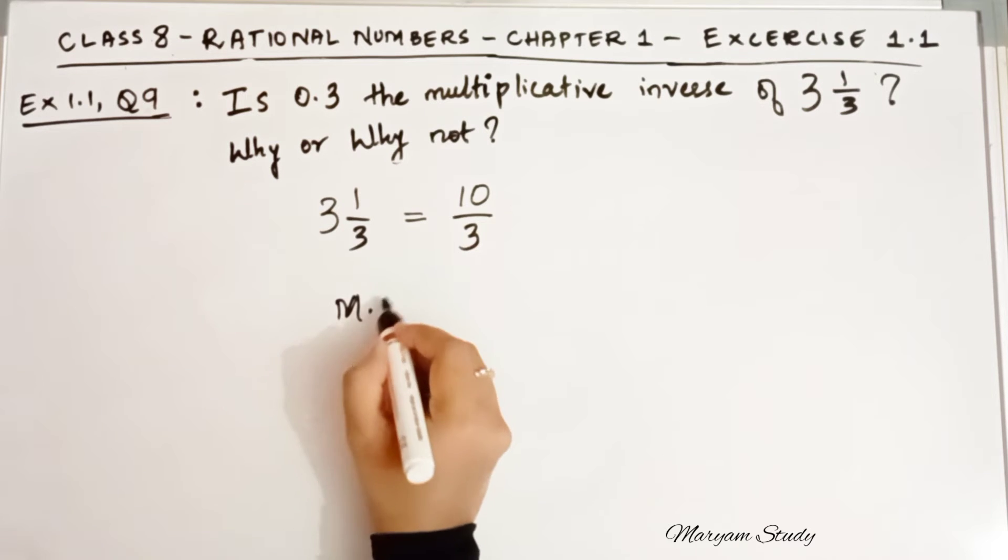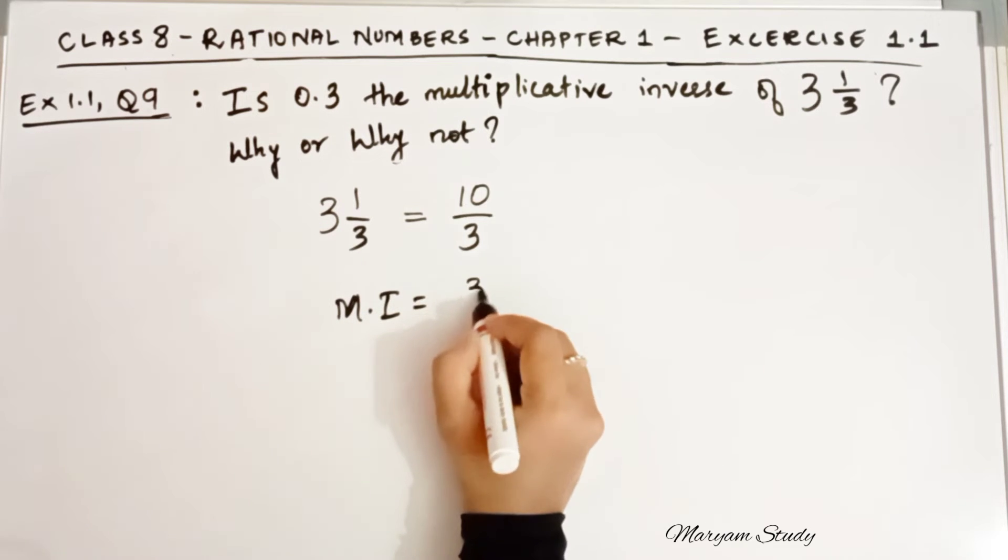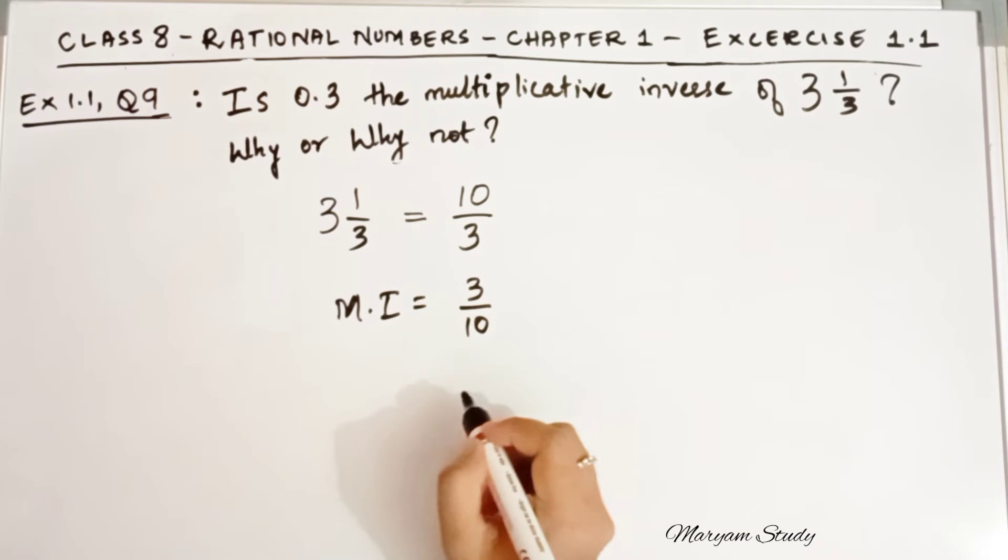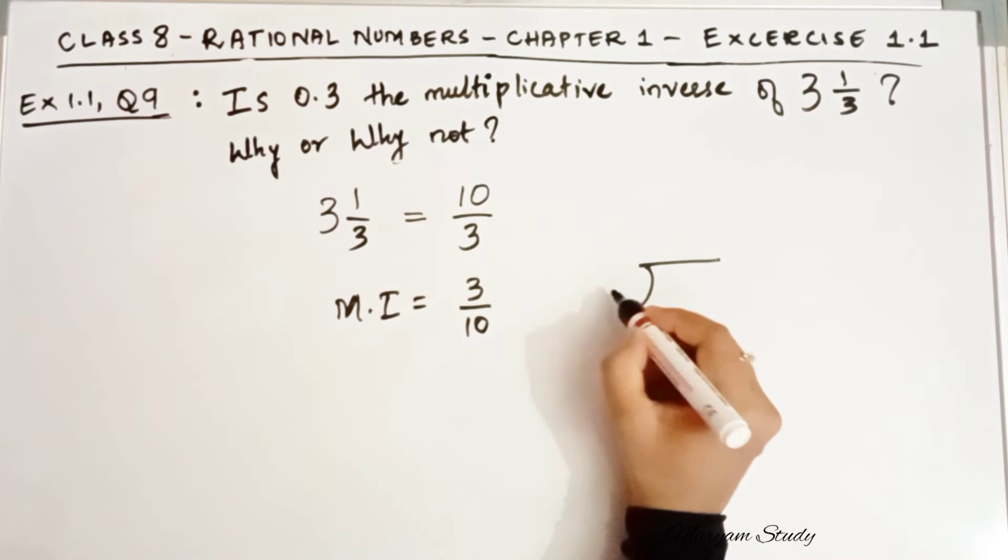So now the multiplicative inverse of 10 by 3 is 3 by 10. So what is 3 by 10? As we have given in the decimal number, we will find out.